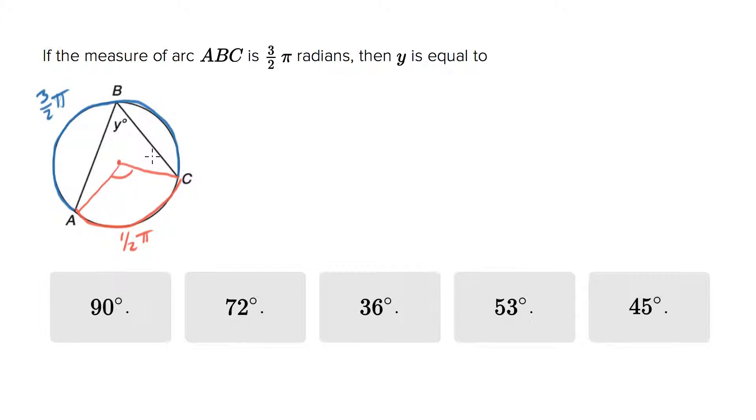In fact, that is the definition of something measured in radians - it's actually a measure of arc length, not of angle. So this angle right here that's cutting out AC corresponds to 1.5π radians.